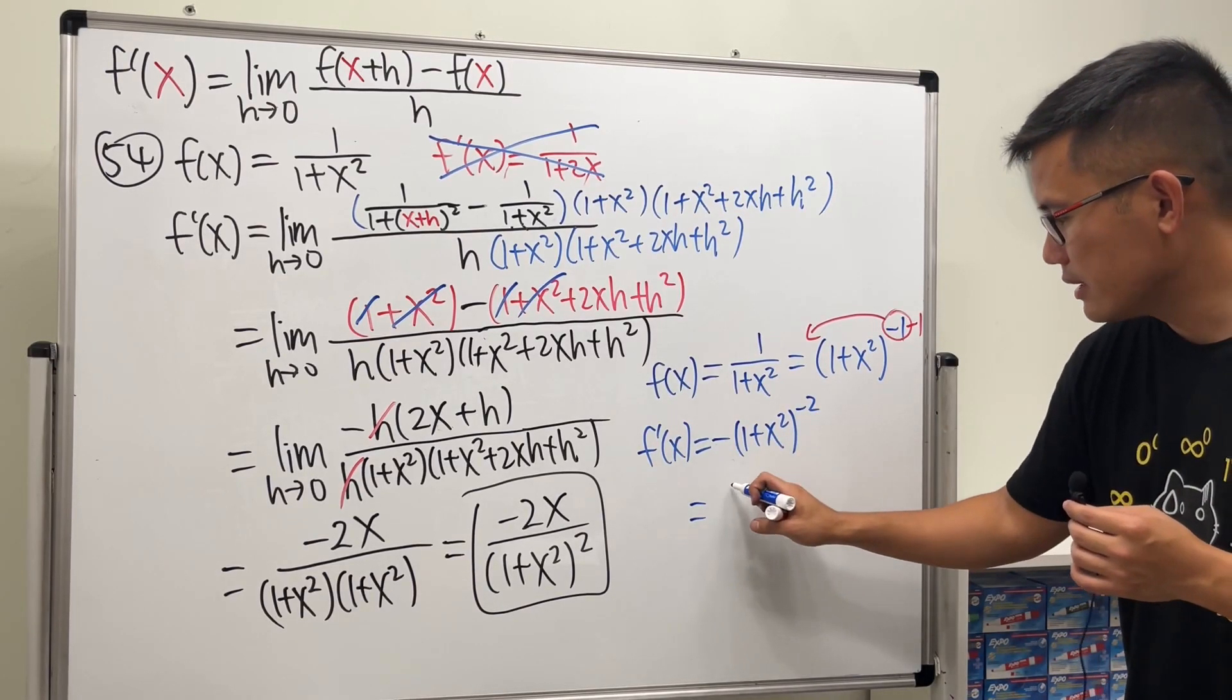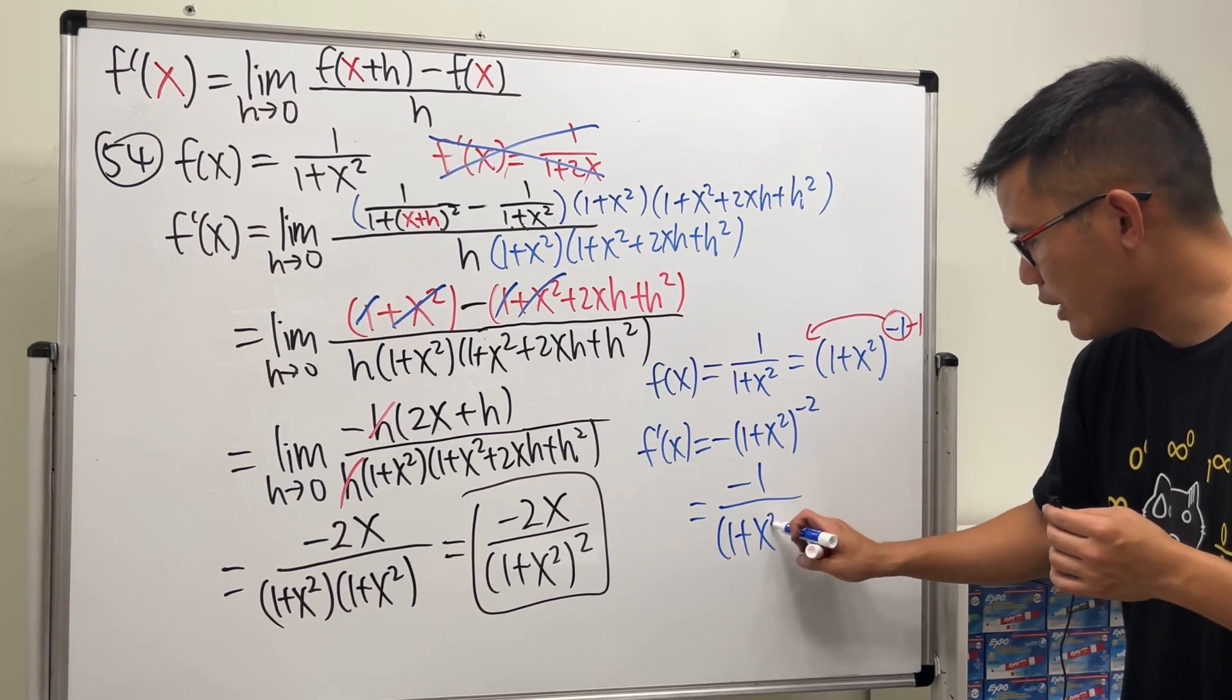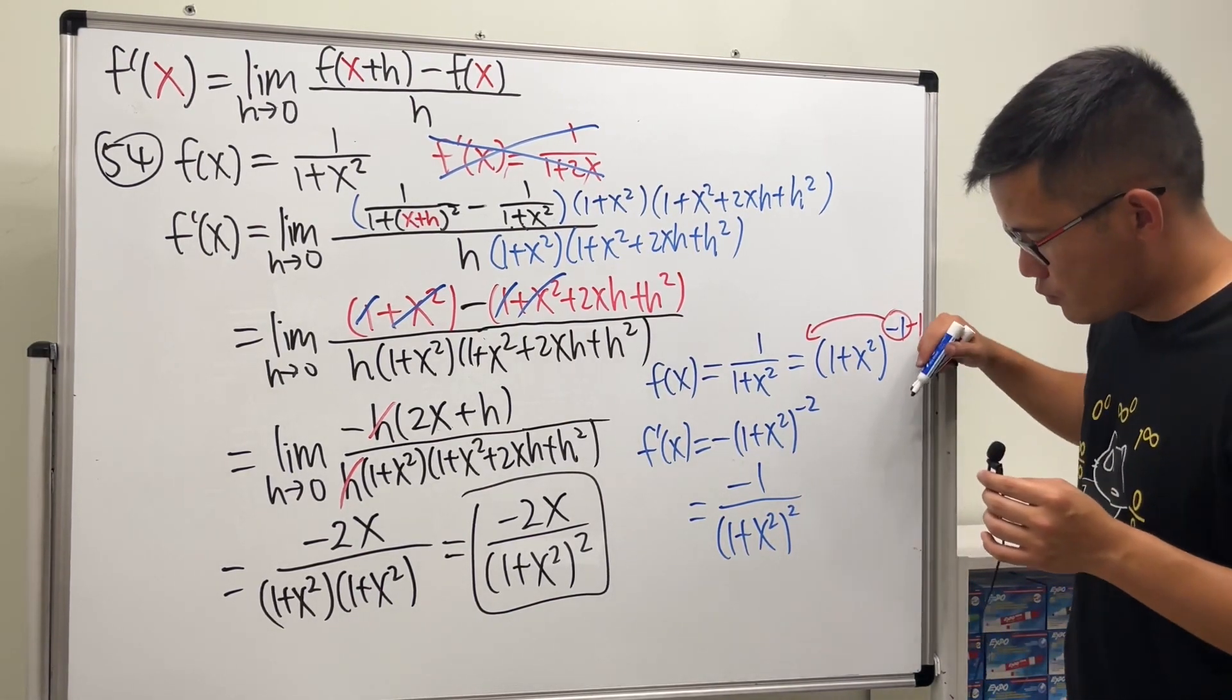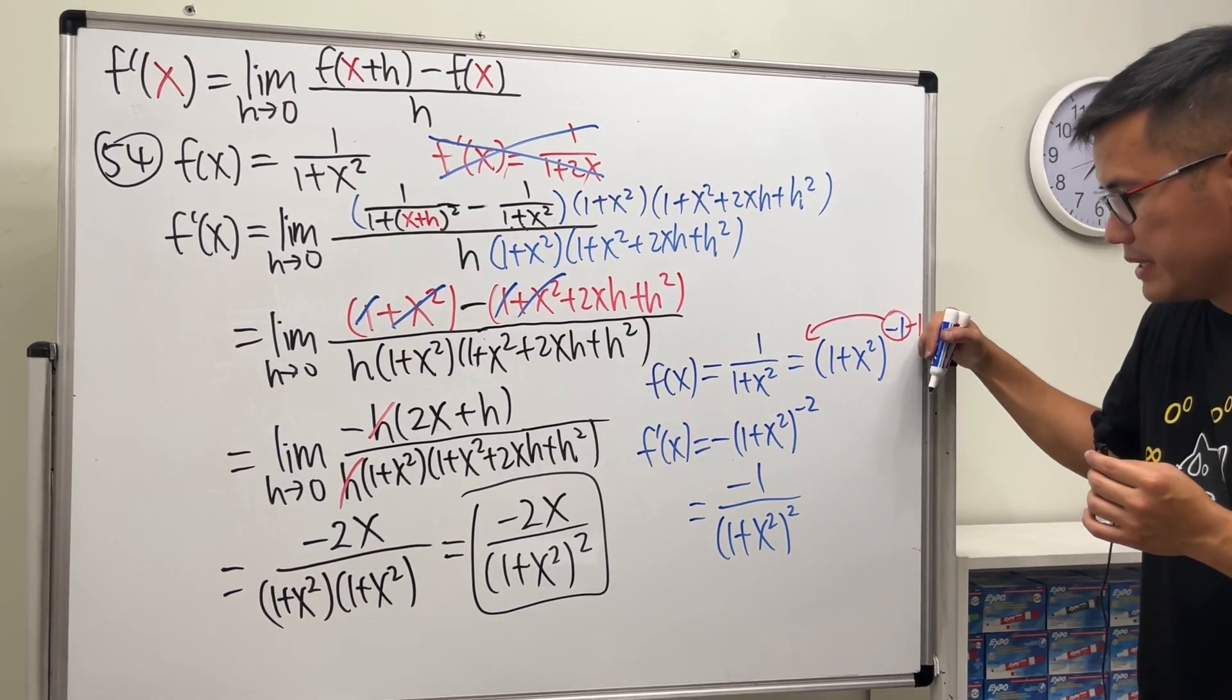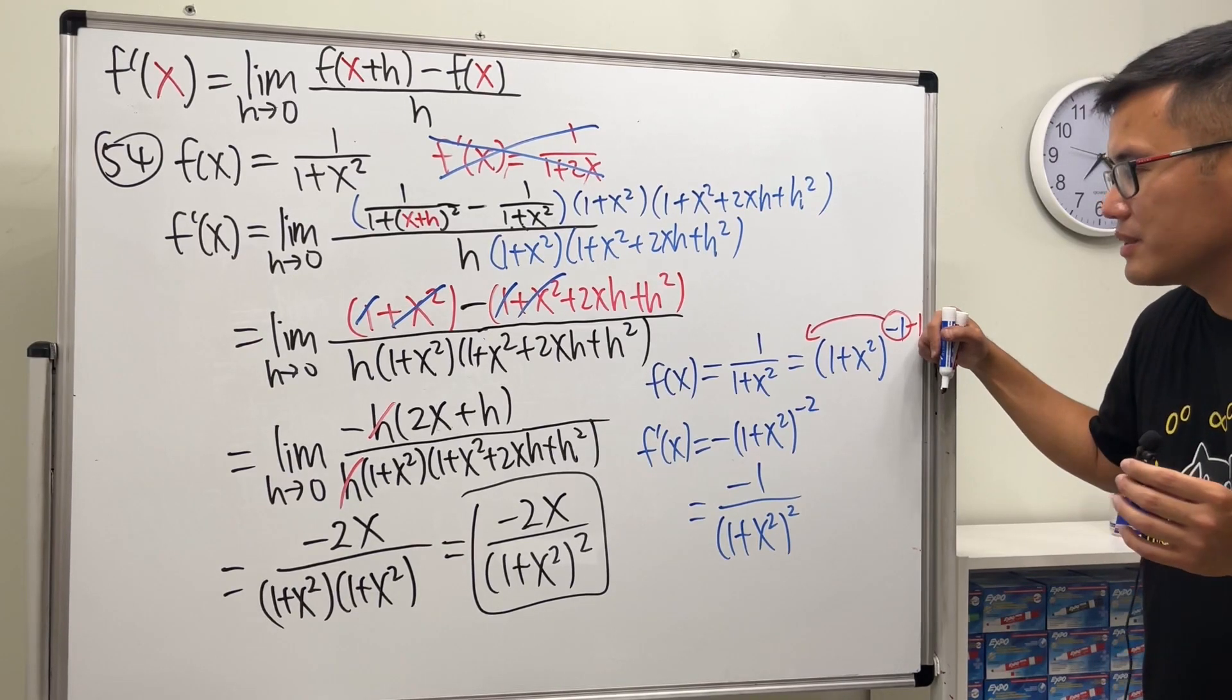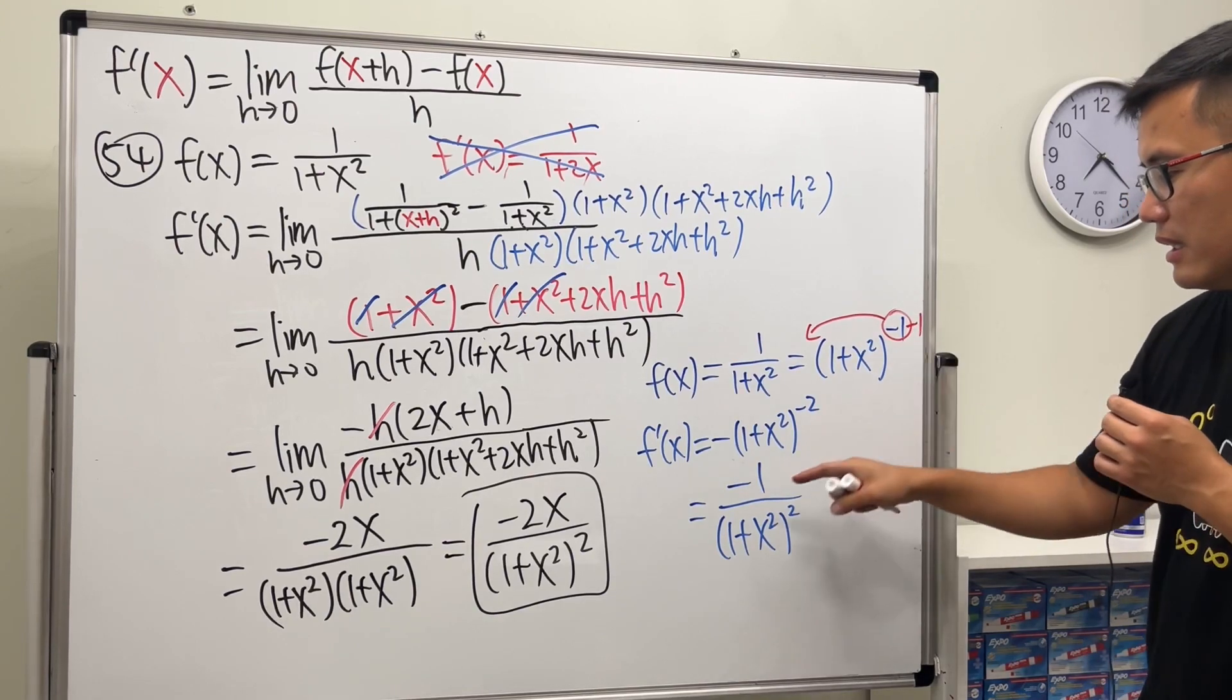I can bring this down to the bottom, and this is negative one over one plus x squared. Wait, I thought we could use the power rule, but I get negative one on the top right here.